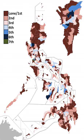Representation in the ARMM Regional Legislative Assembly follows the congressional districts, except for Isabela excluded from Basilan's Assembly District, as it is not included in the ARMM. However, unlike one seat being contested in each district, three seats elected via plurality at-large voting is done.